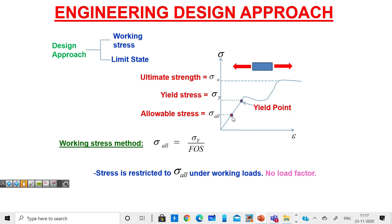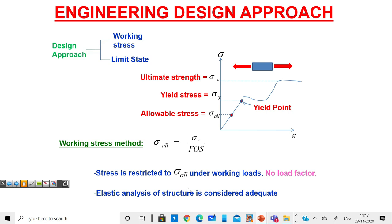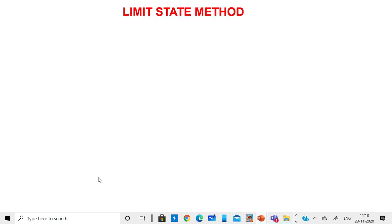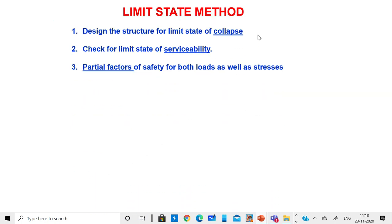In the working stress approach, we don't use any load factors — dead loads, live loads, earthquake loads are not multiplied by any factor. Because the structure is definitely in the elastic range, elastic analysis is used. In the limit state method, we design the structure for the limit state of collapse, then check adequacy for the limit state of serviceability, using partial factors of safety for both loads and stresses.